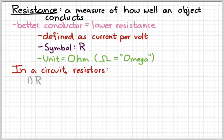So when you put them in a circuit, resistors are going to do two things. Number one, they're going to reduce the current. The bigger the resistance is, the smaller the current.